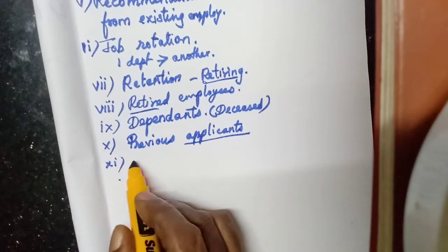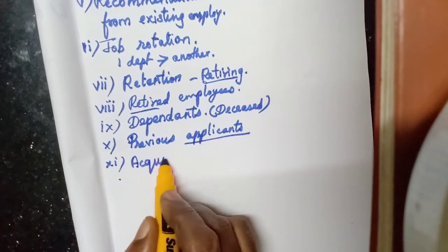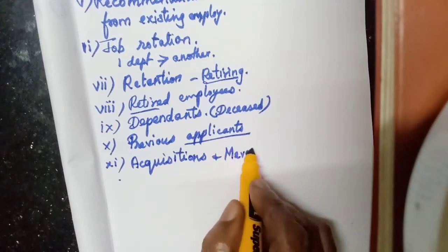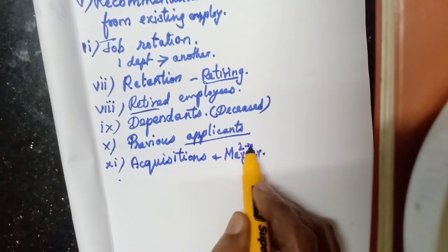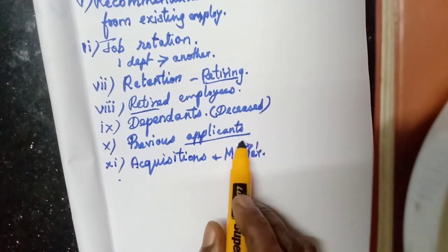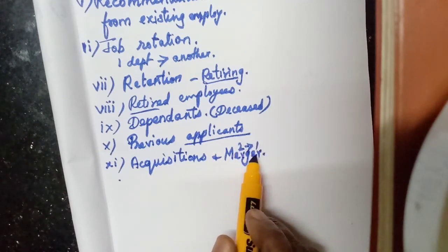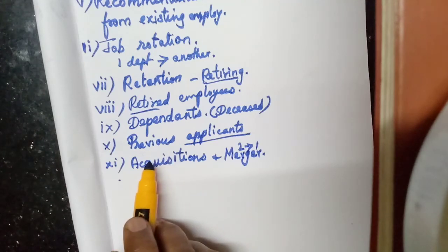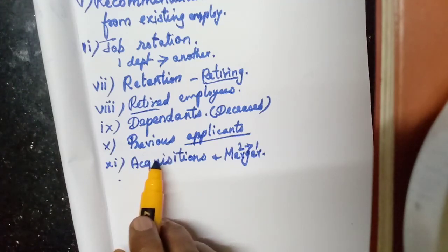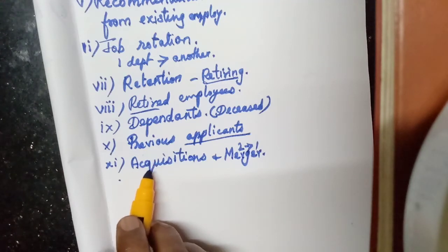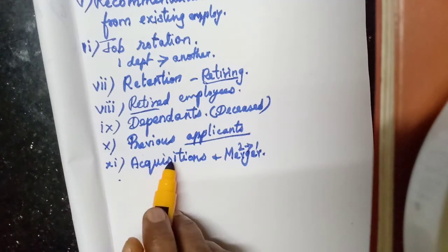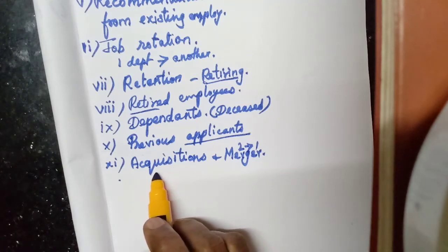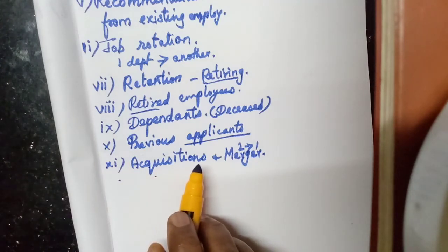The last one is acquisitions and mergers. Acquisition means they will purchase another organization. Merger means two organizations will be joining as one. So here, the two organizations' employees will be working in one organization. The organization that was bought — that organization's employees will be kept as employees. This is also called an internal source because the people are not selected from outside; they are from the same organization which they have bought.